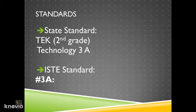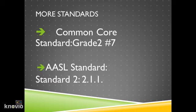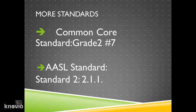We are focusing on standards from various sources to ensure our research success. For our state standard, we will focus on technology TEK 3A, which helps us use strategies to get access to information. We will also focus on the ISTE standard 3A, which allows us to use good strategies to get information. The Common Core standard for second grade, number 7, helps students participate in research and writing projects. We will also be looking at the AASL standard 2, 2.11, which allows you to make informed decisions and continue an inquiry-based research process.